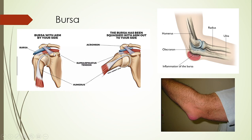Having the bursa there reduces the amount of friction that occurs. It is possible to have inflammation of a bursa, and we refer to that as bursitis — 'itis' referring to any inflammation. Here's an example of an inflamed elbow bursitis. So the bursa is a fat pad that helps reduce friction.